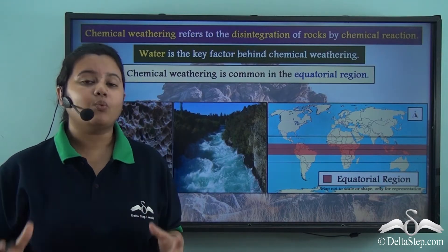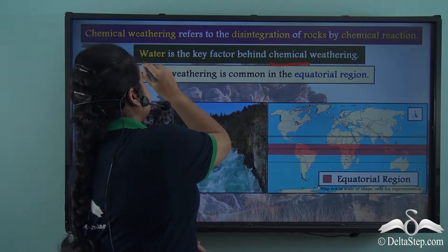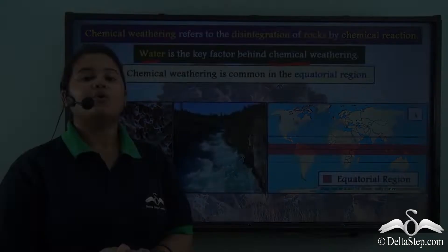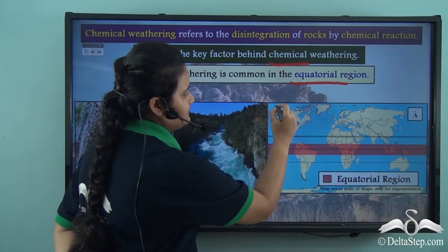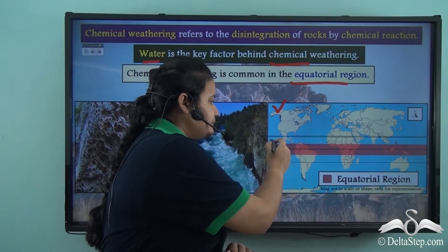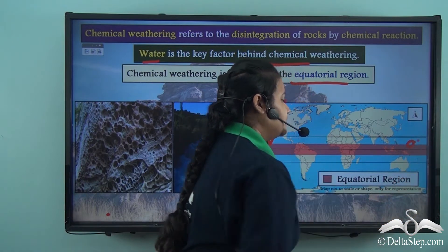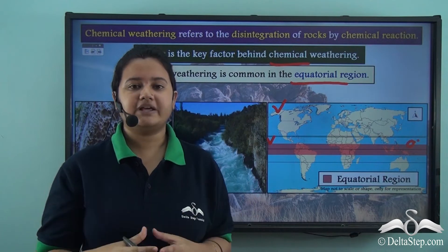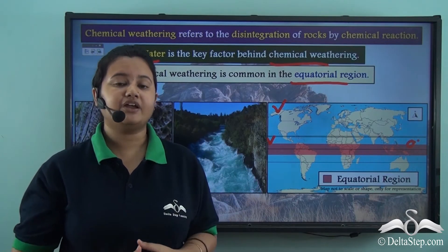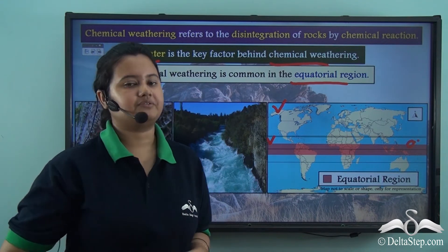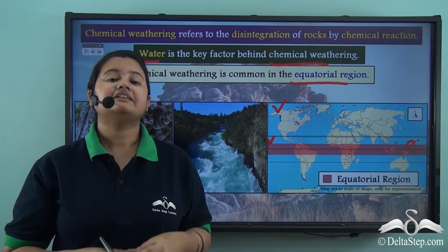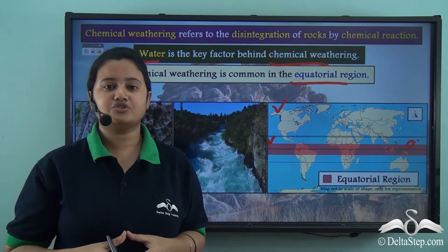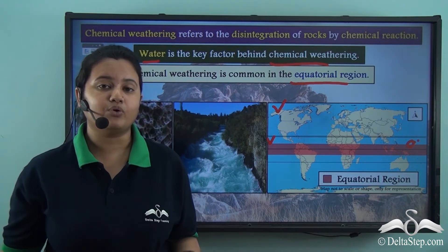Water plays an important role in chemical weathering. Water is found in abundance in hot and humid places like equatorial regions. In this map we can see the equatorial region of the world — the belt across the equator or zero degrees. The rocks present in the equatorial region are vulnerable to chemical weathering because this region is very hot and humid and therefore the availability of water is very high. So the equatorial region is very prone to chemical weathering.